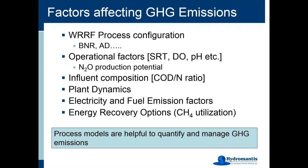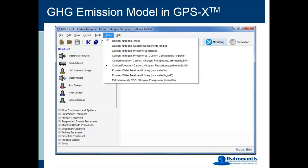In GPSX we have a number of libraries, several of which are standard. One is the carbon footprint library, which is an extension of our Mantis 2 library, supplemented with procedures to estimate nitrous oxide from processes and incorporate other elements necessary to estimate greenhouse gases from wastewater treatment plants. This is an add-on library, and if it is not active in your GPSX license, you can contact us to add it to your system.